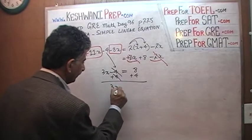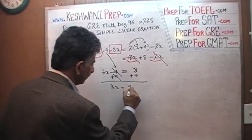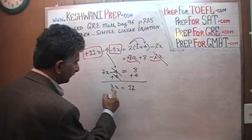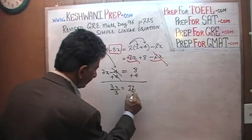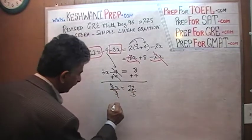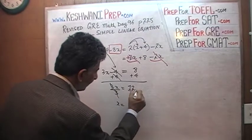So therefore the 3x equals 8 plus 4 which is 12. Let's get rid of this 3 by dividing both sides of the equation by 3. And the 3 drops out and x equals 12 divided by 3 which is 4.